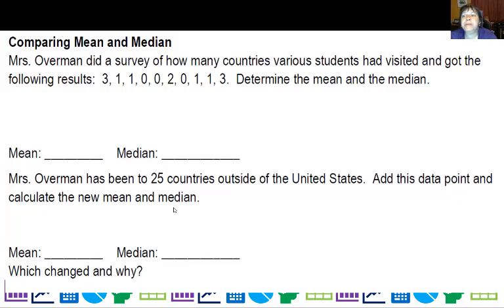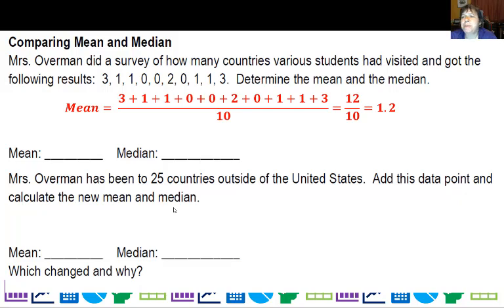Let's compare the mean and the median. I did a survey of how many countries various students have visited and got the following results: 3, 1, 1, 0, 0, 2, 0, 1, 1, 3. For the mean, we're going to do it the old fashioned way: add them up, divide by 10, and I get 1.2 is my mean. For the median, put them in order, cross off equal size groups from each end. The mean is 1.2 and the median is 1. I've been to at least 25 countries outside of the US. Lucky me. Add this data point and calculate our new mean and median.